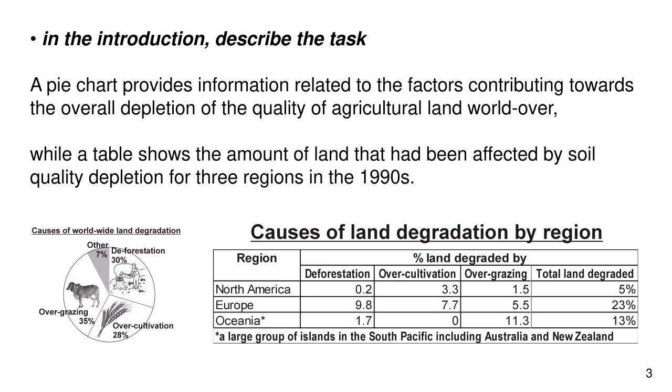In the introduction, describe the task. A pie chart provides information related to the factors contributing towards the overall depletion of the quality of agricultural land world over, while a table shows the amount of land that has been affected by soil quality depression of three regions in the 1900s.